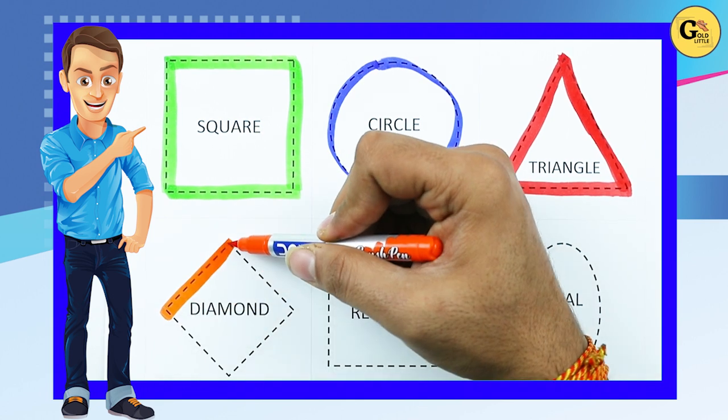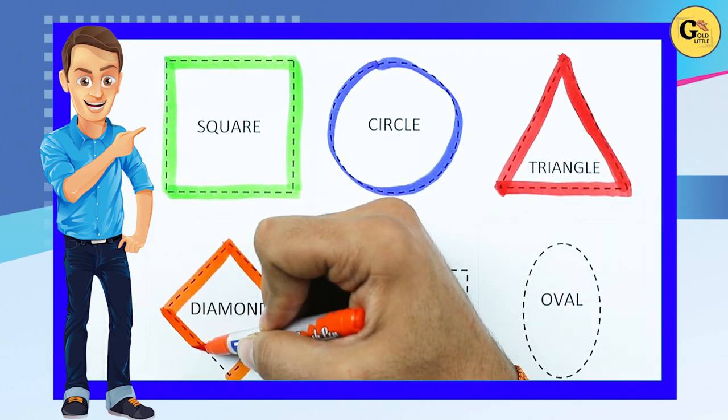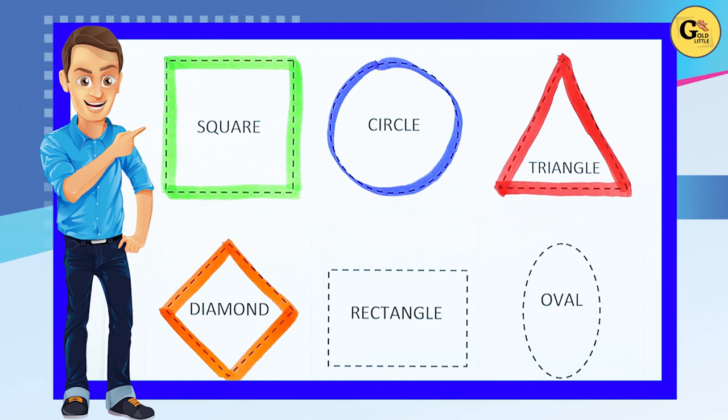One sliding line, two sliding line, three sliding line, four sliding line. It's a diamond, orange color diamond.